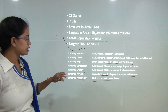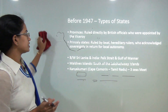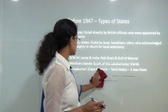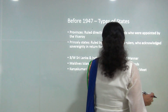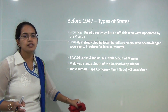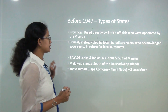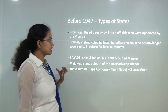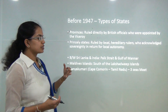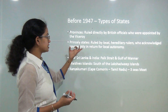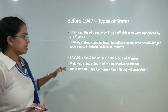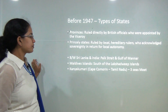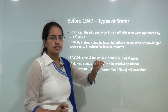Before 1947, there were two types of states in India: provinces and princely states. Provinces were directly under British rule, with a British official appointed by the Viceroy. Princely states were ruled locally by their own rulers, who acknowledged British sovereignty in exchange for local autonomy — for example, the princely state of Junagadh. Between India and Sri Lanka, the Palk Strait and Gulf of Mannar exist. The Maldive Islands lie further south of Lakshadweep in the Arabian Sea. Kanyakumari in Tamil Nadu is where the three seas meet.